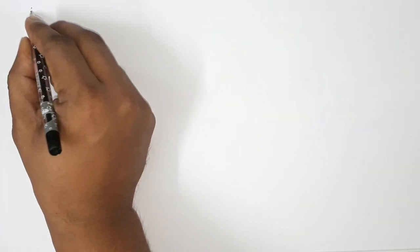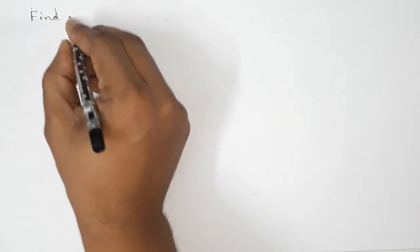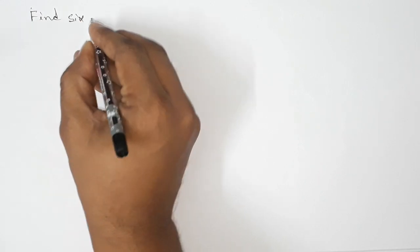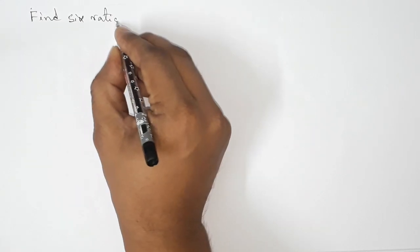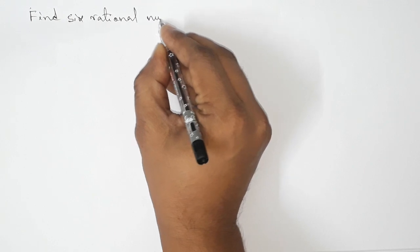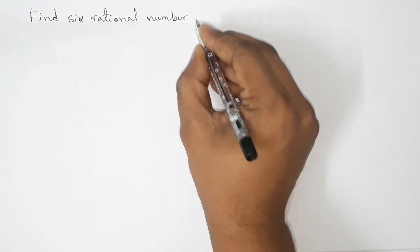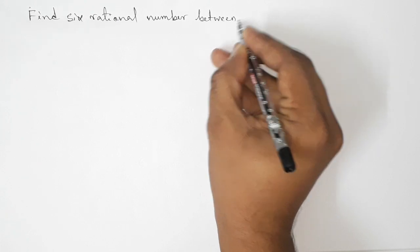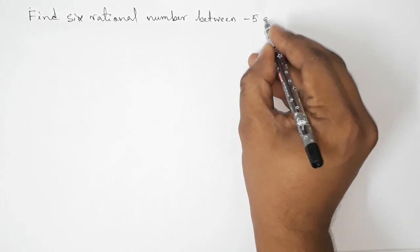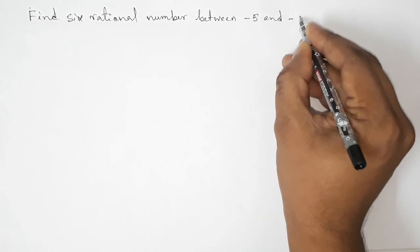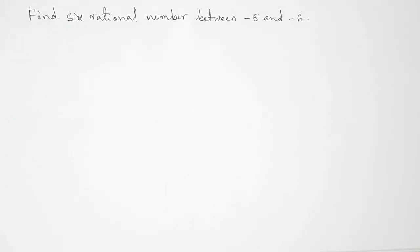Hi everyone, welcome to SI Share Classes. Today in this video we have to find six rational numbers between minus five and minus six in an easy way, so please watch the video till the end. So let's start the video.